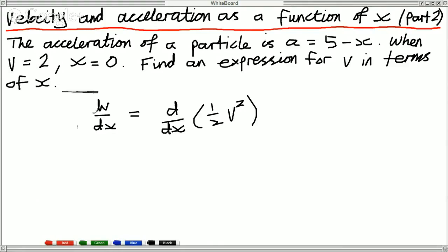So we'll use these to go about solving this problem. The acceleration of a particle is given by acceleration equals 5 minus x. When velocity is 2, x is 0, so it's at the origin. Find an expression for v in terms of x.